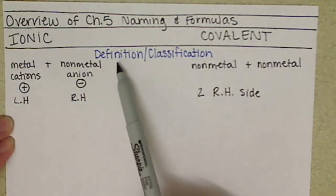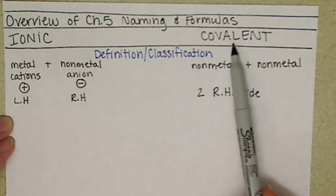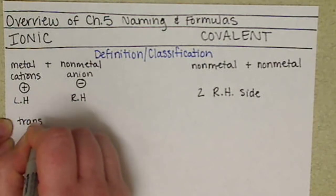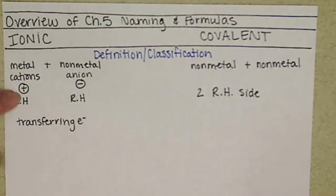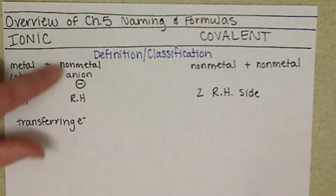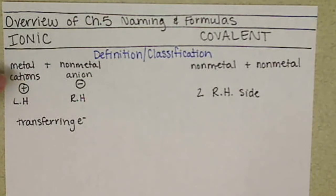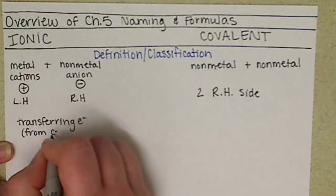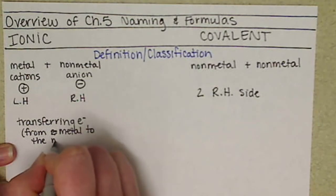Further classification: in an ionic bond, we're transferring electrons. Cations, our metals, want to give up electrons. Anions, our nonmetals, want to accept an electron. So what's happening is our electron is moving from the metal to the nonmetal.